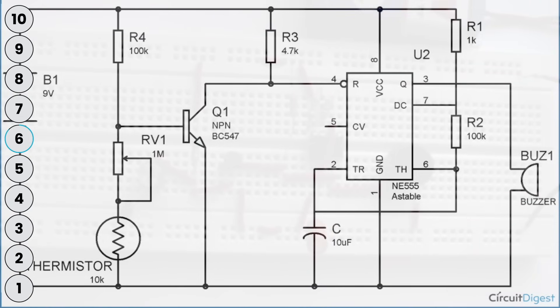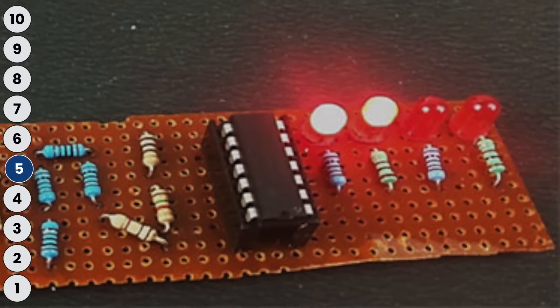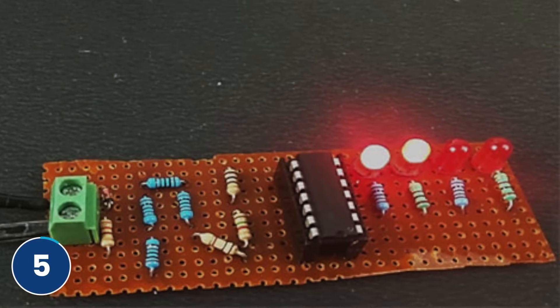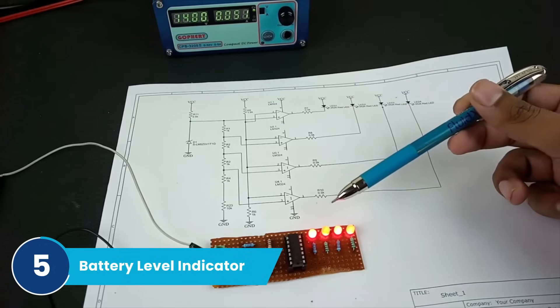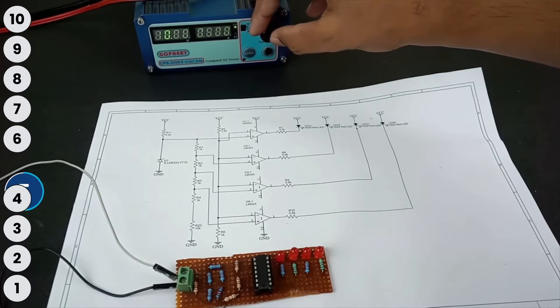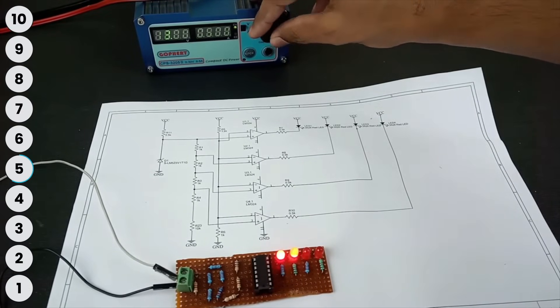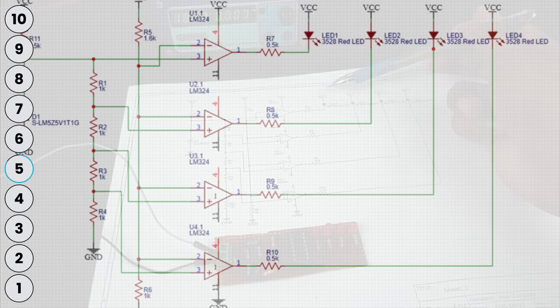Coming on at number five on our list is the battery level indicator circuit. So this circuit has a bunch of LEDs and based on the capacity of the battery, these LEDs will turn on. The main IC behind this project is the LM324 op-amp and you just need a few more resistors to make this circuit work.